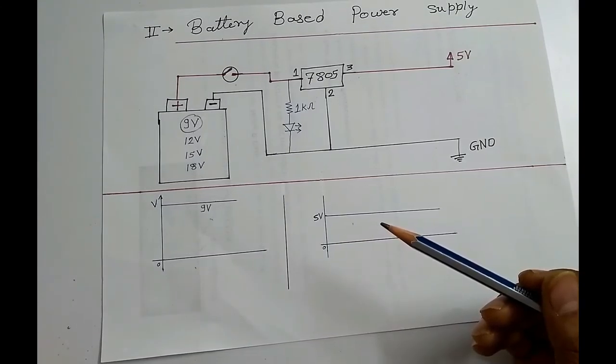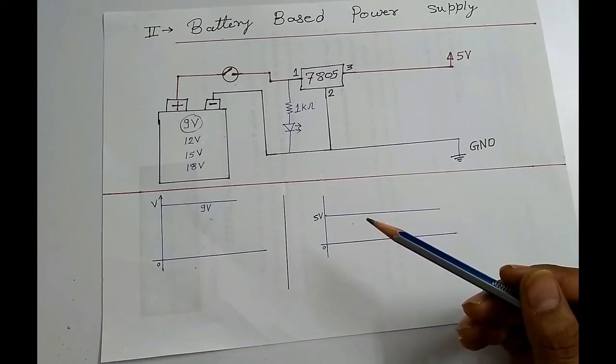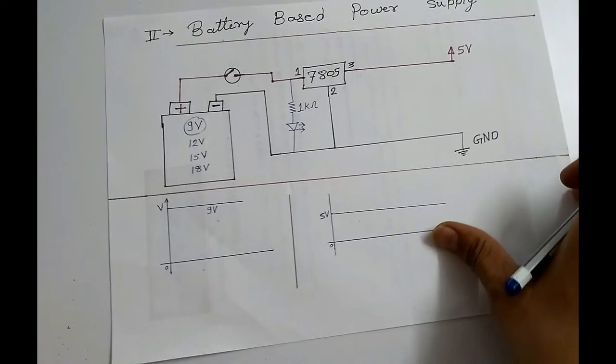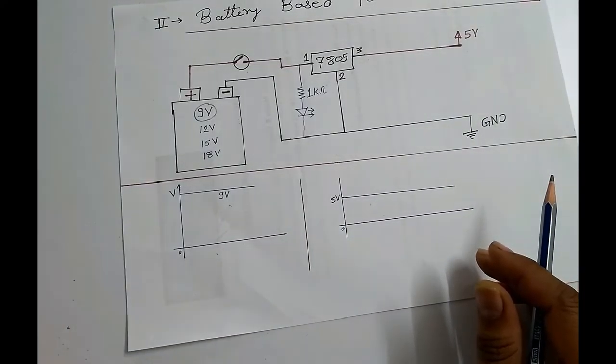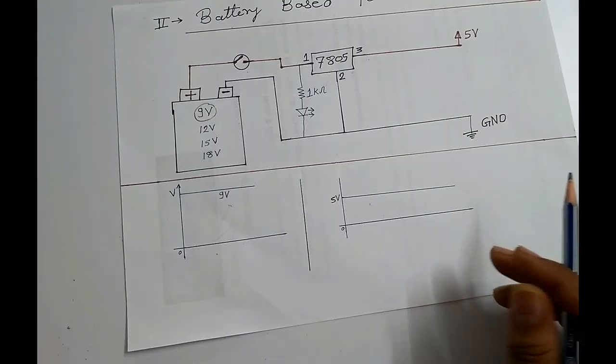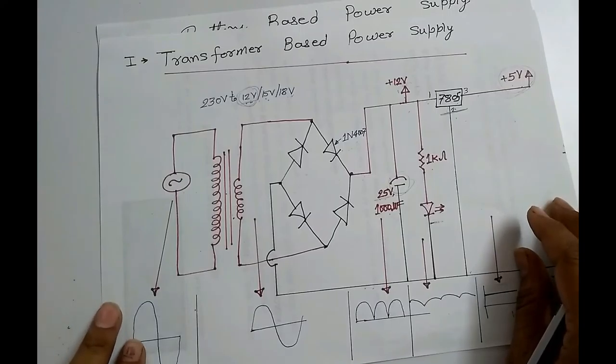You must be having question that where you require which power supply from these two types. So friends, answer is: if your device or application is always movable, means not fixed, there you can use battery-based power supply. Otherwise, if your device or application is fixed and cannot move, then you have to use this transformer-based power supply.